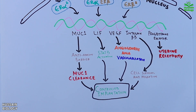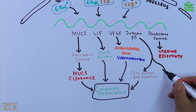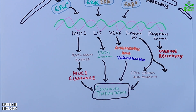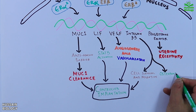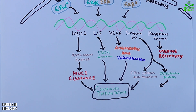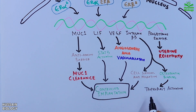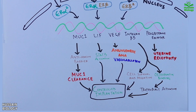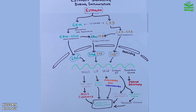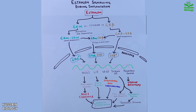Finally, integrin beta 3 also mediates osteopontin binding, which drives trophoblast activation and in turn leads to controlled implantation. So these are the various signals mediated via estrogen during implantation.